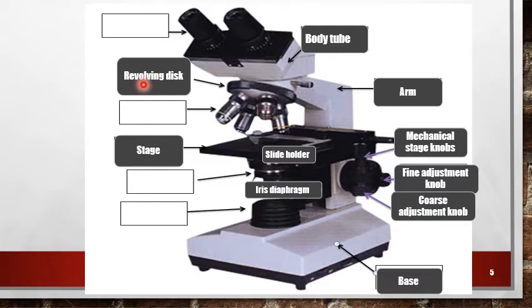Revolving disk is used to move the objective lens from one to another, for example from 4x to 10x or from 10x to 40x.